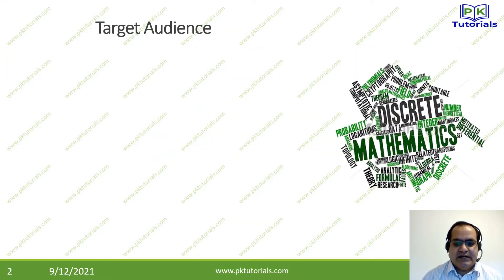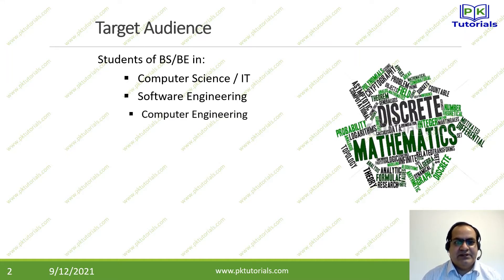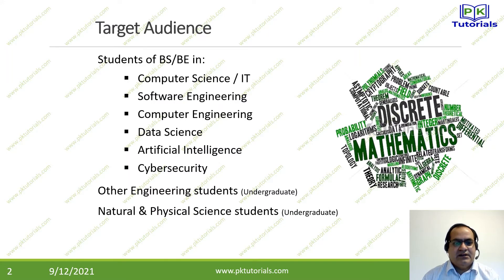The target audience for this course is undergraduate level students, and it is specially designed for students of B.S. and B.E. — Bachelor of Science and Bachelor of Engineering — majoring in Computer Science, Information Technologies, Software Engineering, Computer Engineering, also for Data Science, Artificial Intelligence, Cyber Security, and other engineering students, also for Natural and Physical Science students at undergraduate level.